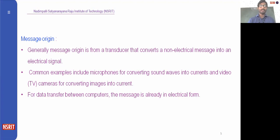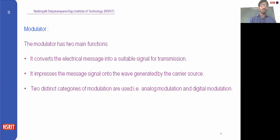For data transfer between computers, the message is already in electrical form, so there is no need for a transducer — the information is already in electrical form and does not need to be converted again. Next, in the block diagram we have a modulator. What is the purpose of the modulator?